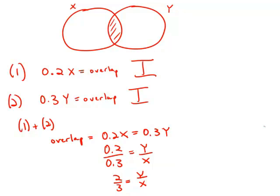Well, now we know that the members of X and the members of Y are in a ratio of 2 to 3. So we know that X has more members. So when we combine the two statements, we do have sufficient information to answer. And so that means the answer is C.